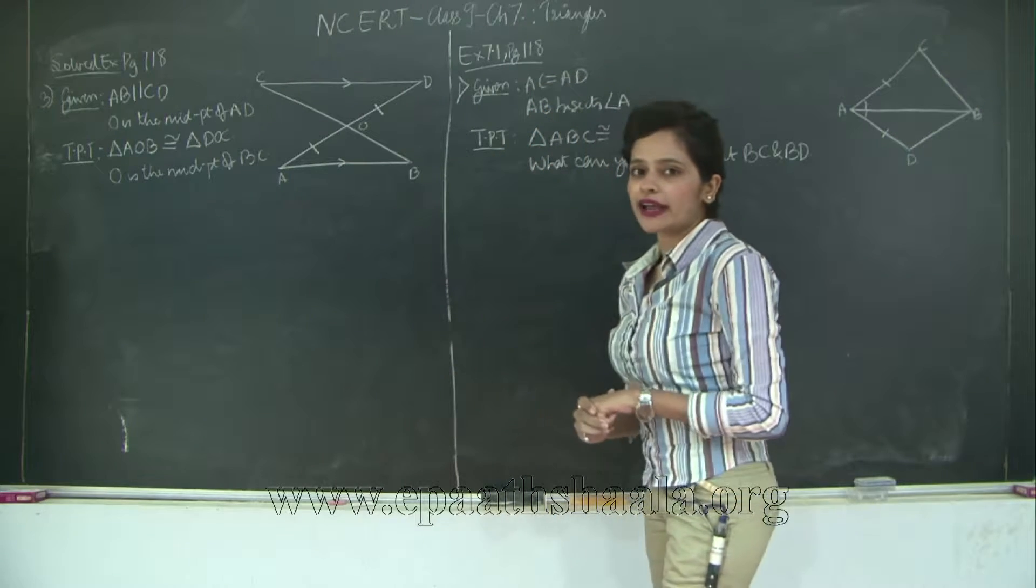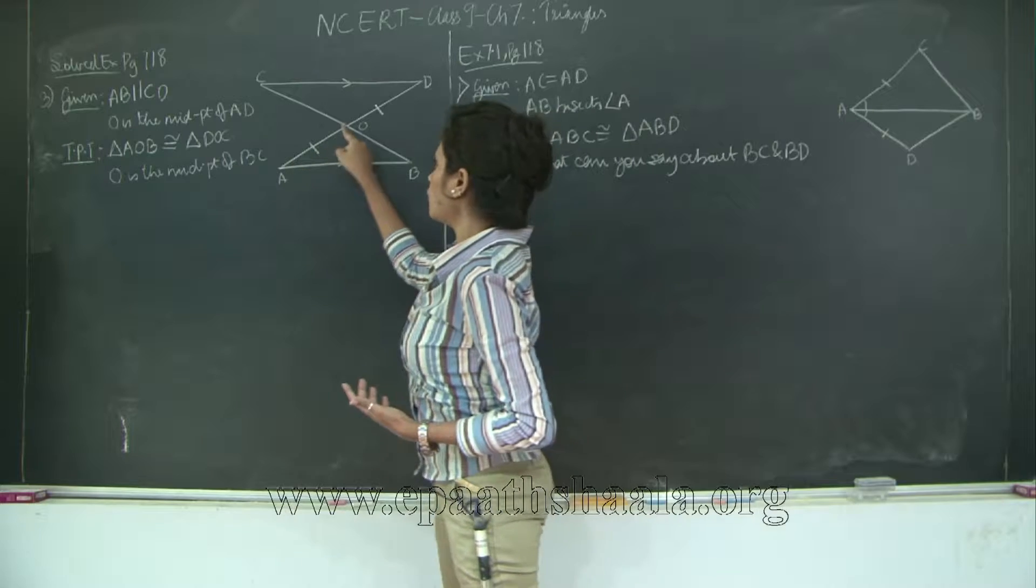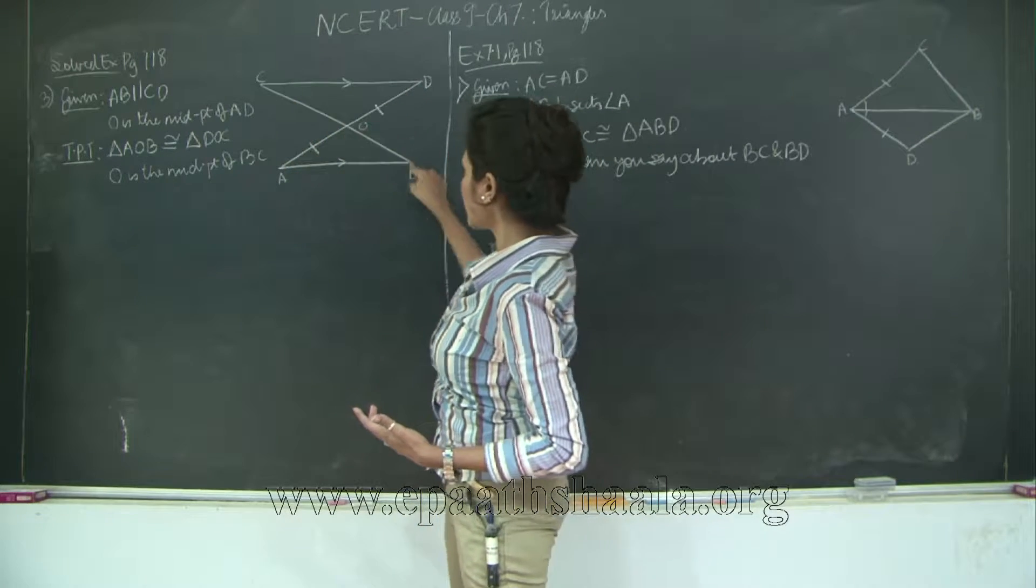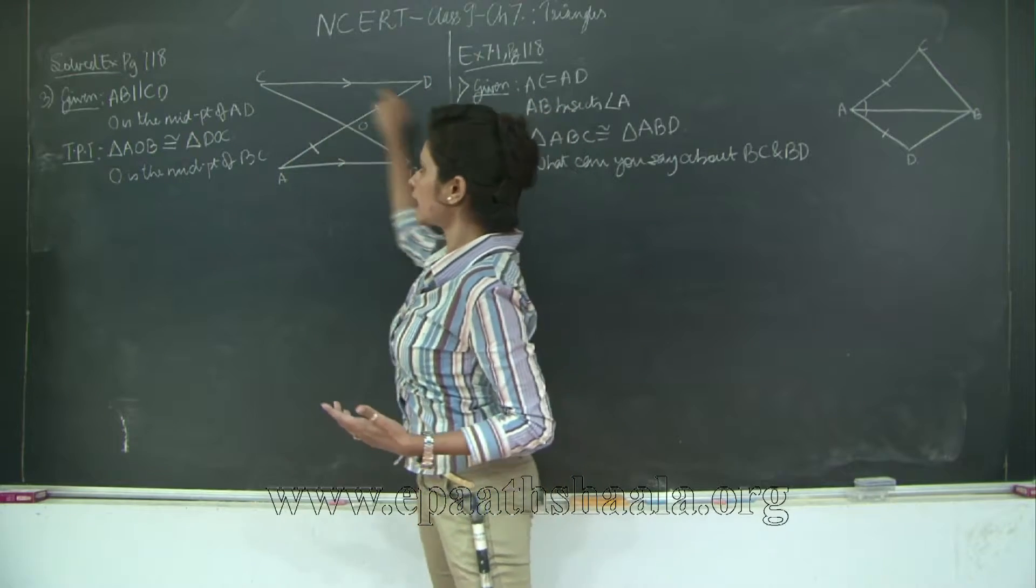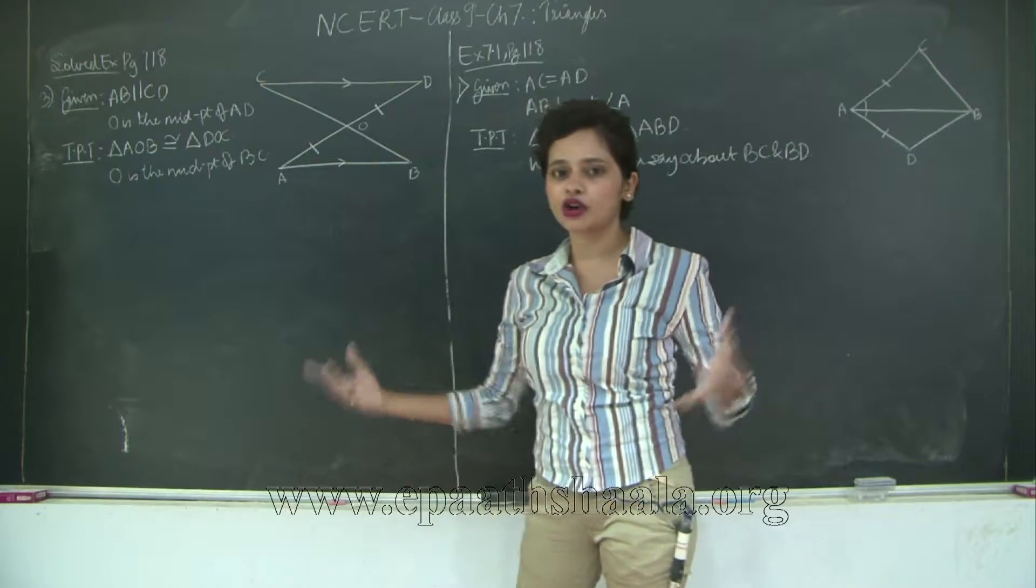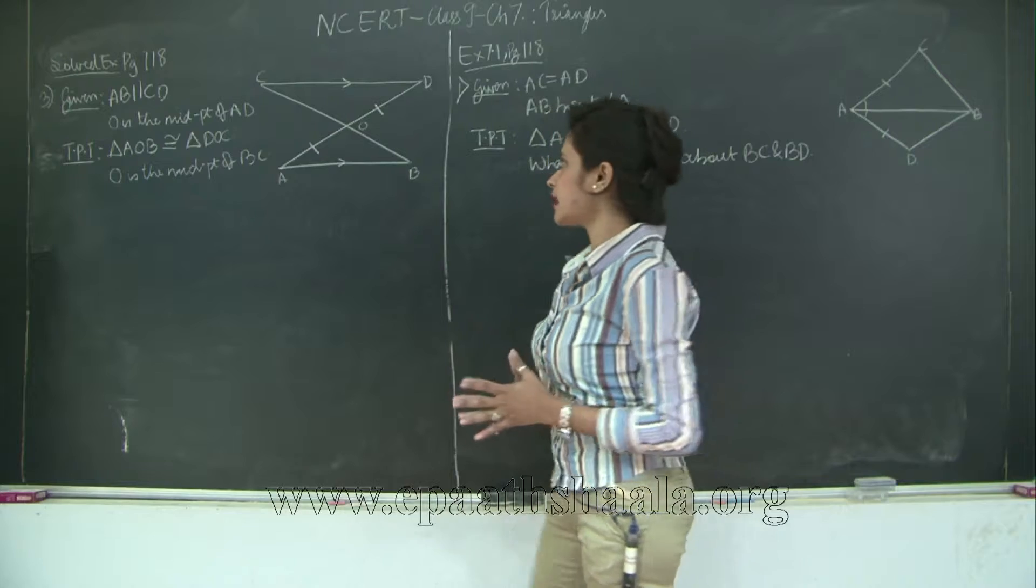We need to prove that the two triangles are congruent. So which are the two triangles? Let's go in order. AOB and DOC. We need to prove that this triangle is congruent to this triangle and we also need to prove that O is the midpoint of BC. So in short what do we need to prove? That OC is equal to OB. So let us see how we do this.